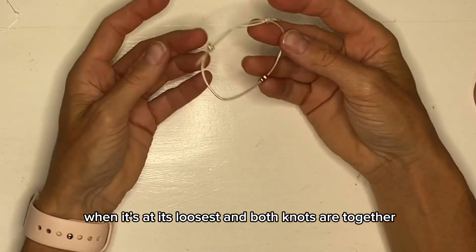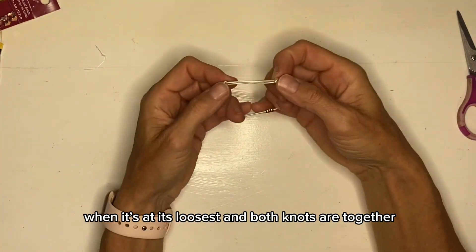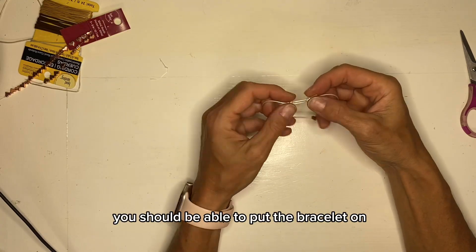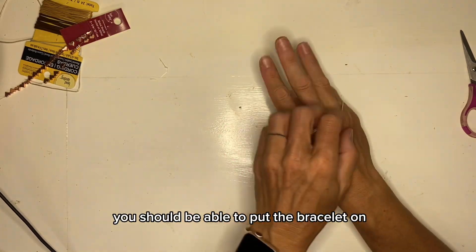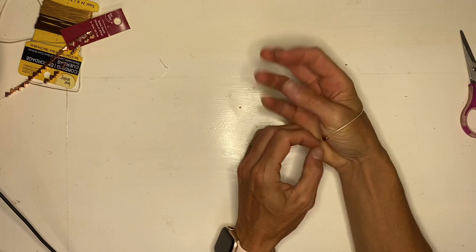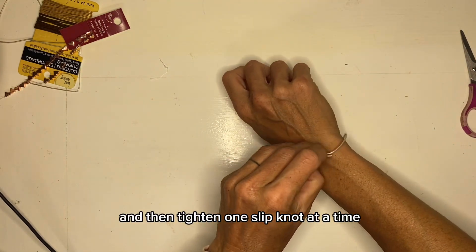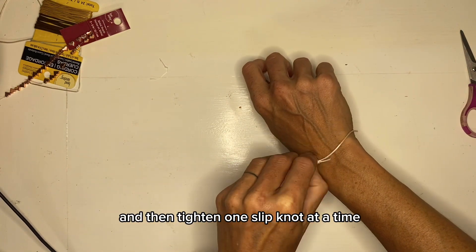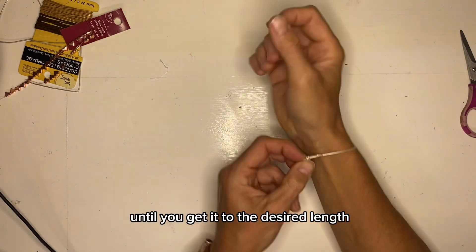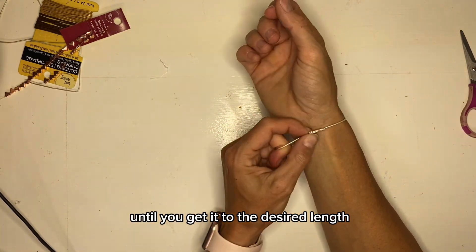When that's at its loosest and both knots are together you should be able to put the bracelet on over your wrist and then tighten one slip knot at a time until you get it to the desired length.